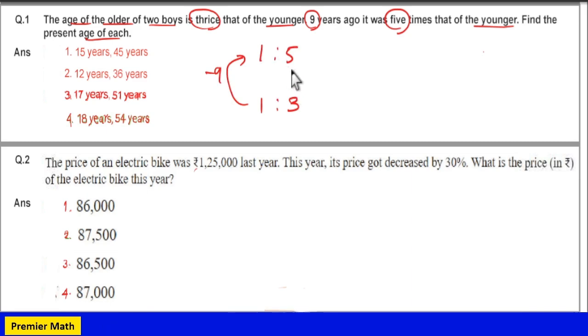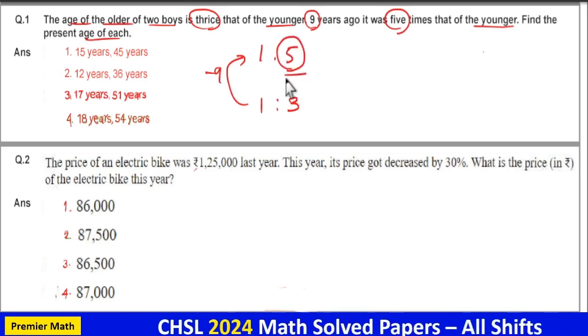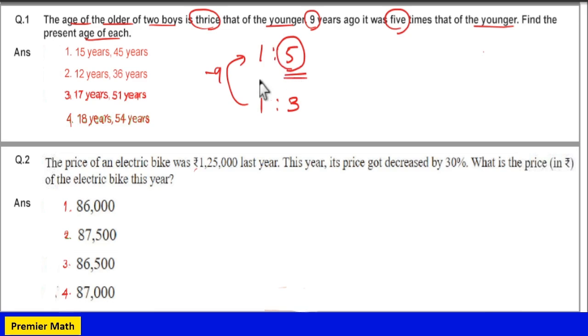Now you can see 9 years ago the older one's age is a multiple of 5. Now check for the multiple of 5.